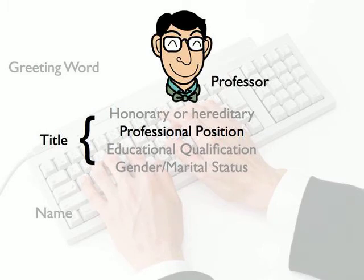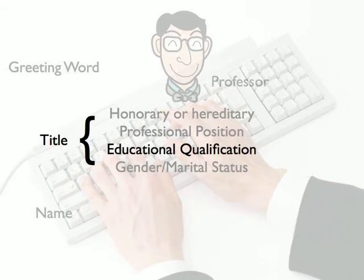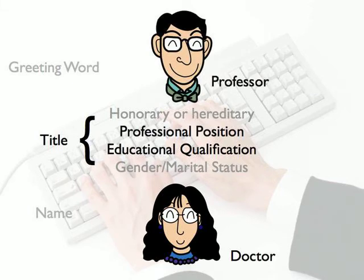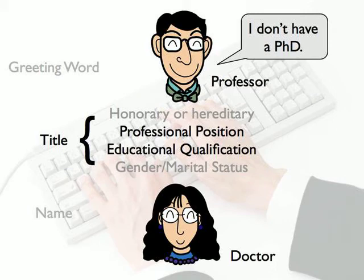'Professor' is an example of a professional position title — it is a job title at a university or research institute, and it is inappropriate to use it for anyone not in a professor or associate professor position. 'Doctor' is a title gained through a qualification: if you complete a PhD or become a qualified medical doctor, people may call you 'Doctor' regardless of your job. This distinction is particularly important in the university world — it would be inappropriate to address your professor as 'Dr Tanaka' if he did not have a PhD.